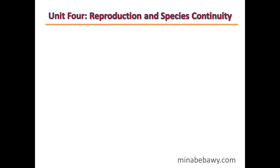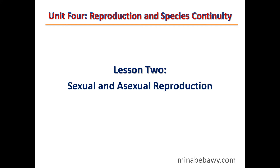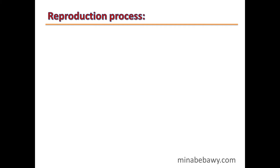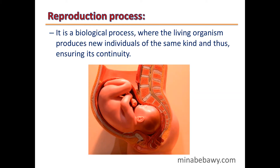Unit 4: Reproduction and Species Continuity, Lesson 2 — Sexual and Asexual Reproduction. The reproduction process is a biological process where a living organism produces new individuals of the same kind, thus ensuring its continuity.